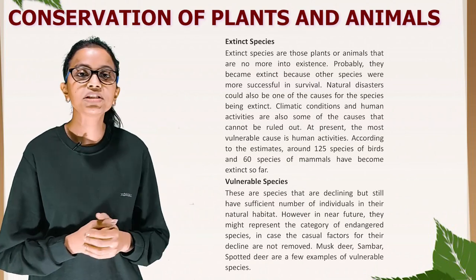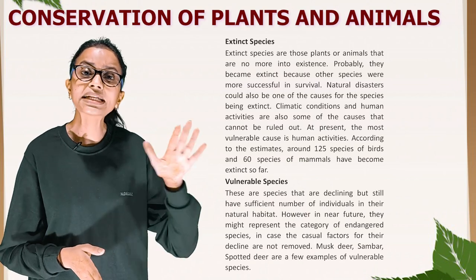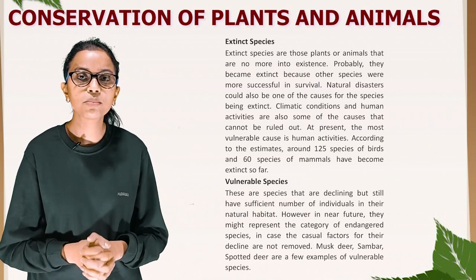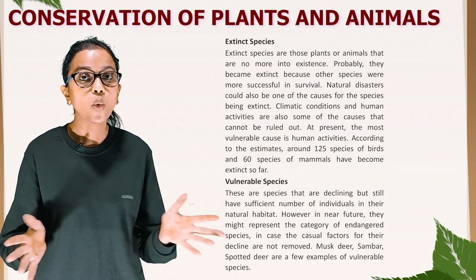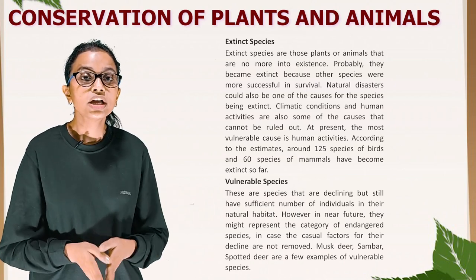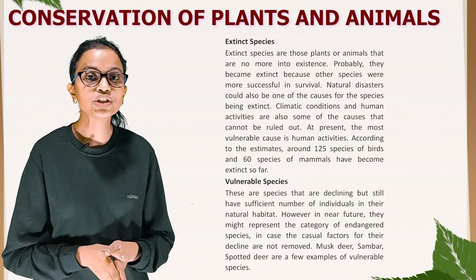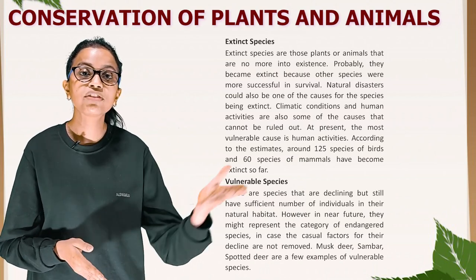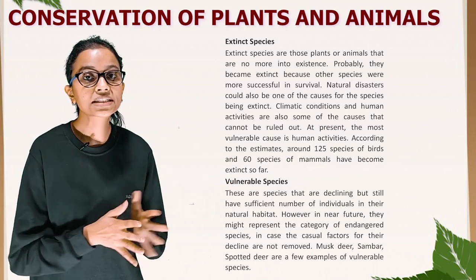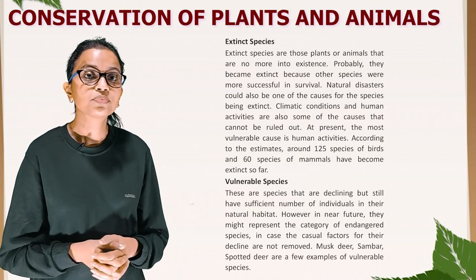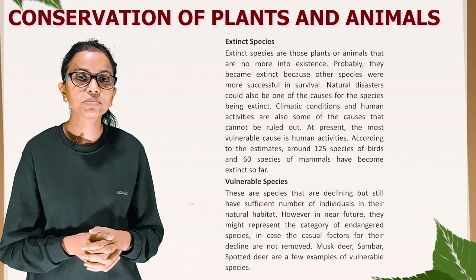Vulnerable species are those that are declining but still have sufficient numbers of individuals in their natural habitat. However, in the near future they might enter the category of endangered species if the causal factors for their decline are not removed. Musk deer, Sambhar and spotted deer are a few examples of vulnerable species.